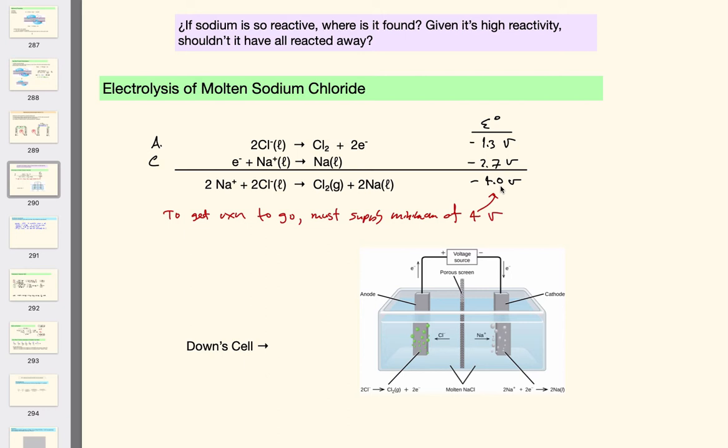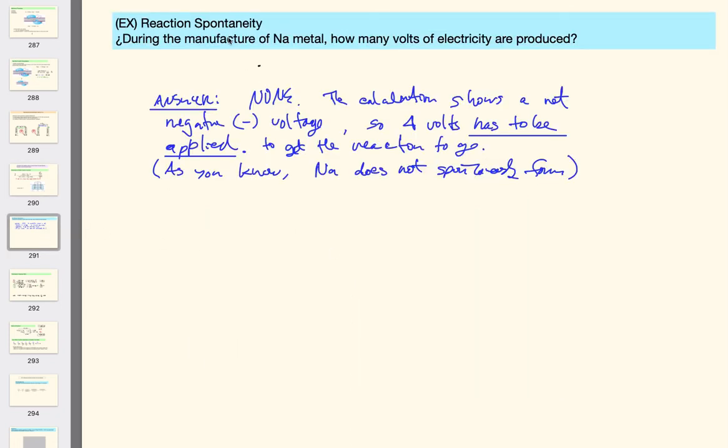And that's what happens in this case where you take table salt and you react it and make chlorine gas and sodium by way of a voltage source. So let's work a real quick question here.